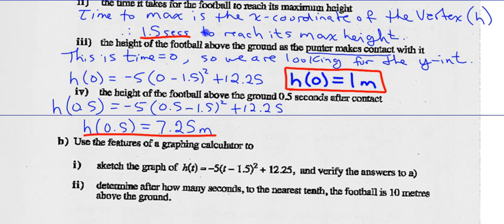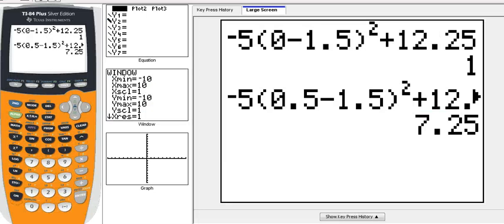So does that make sense? Half a second after the punter kicks it, it is now at 7.25 meters above the ground. Yeah, that's getting off the punter's foot pretty quick. Part B. Make a sketch. Use the feature of the graphing calculator to sketch the graph of this function and verify the answers to A.